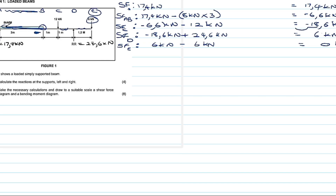Now we just need to identify the maximum shear force. Looking at all the values, the maximum is 18.6 kilonewtons — it doesn't matter that it's negative; it is the highest magnitude value and so that is your maximum shear force.